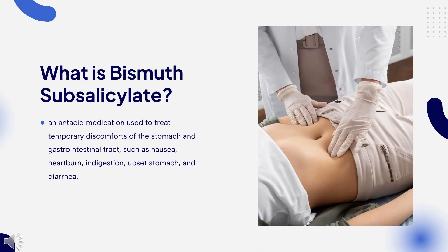What is bismuth? Bismuth subsalicylate, sold generically as pink bismuth and under the brand names Pepto-Bismol and Bisbacter, is an antacid medication used to treat temporary discomforts of the stomach and gastrointestinal tract, such as nausea, heartburn, indigestion, upset stomach, and diarrhea.